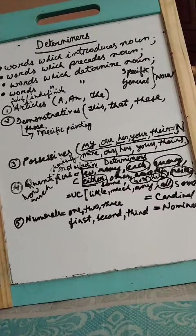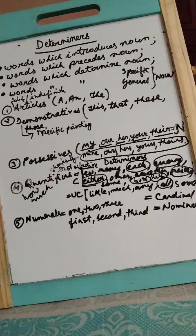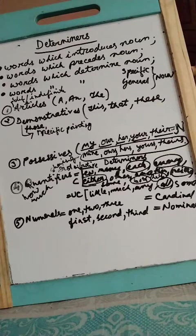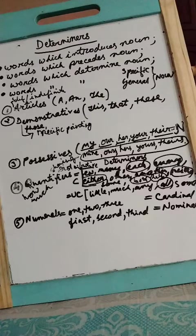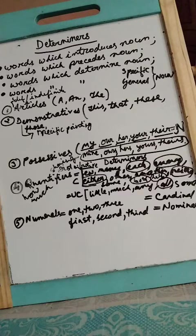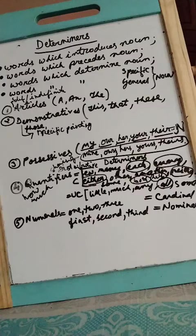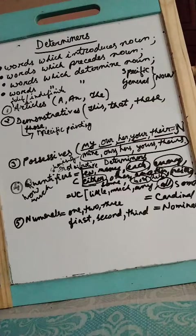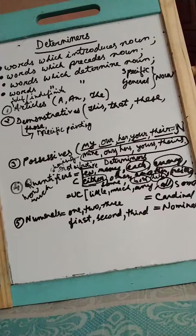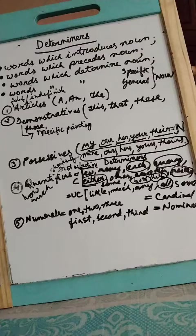They point at something, specify something. This is the book I wanted. This was the book I wanted - you are specifying something. That is the book I wanted. That was the book I had asked for, so specifying something. These are the boys who did not behave well in the class - you're specifying. So this, that, these, those come under demonstrative determiners.